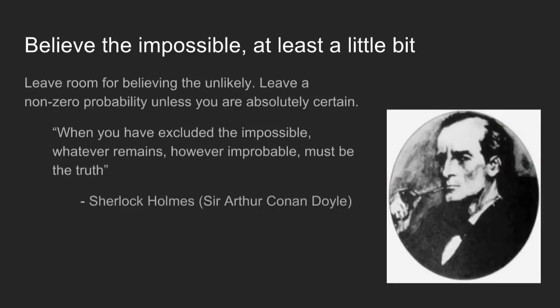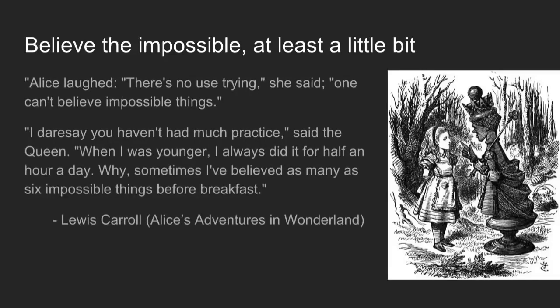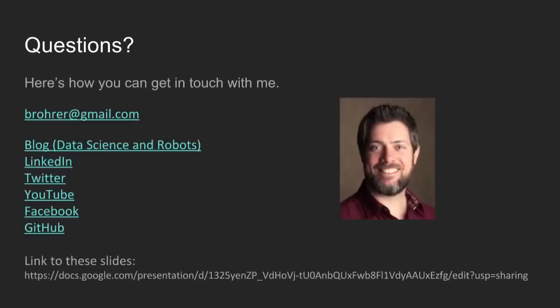The way to avoid this pitfall is to always believe things that we think are impossible — at least just a little bit. By leaving this room for something to be impossible, we can do like Sherlock Holmes says: 'Once you've excluded the impossible, then whatever remains, however improbable, must be the truth.' We don't want to exclude the improbable out of hand because then we're left with nothing. As Alice in a conversation with the Red Queen summed it up: 'There's no use in trying,' she said. 'One can't believe impossible things.' 'I dare say you haven't had much practice,' said the Queen. 'When I was younger, I always did it for half an hour a day. Sometimes I've believed as many as six impossible things before breakfast.' The secret to using Bayesian inference well is to keep believing impossible things. Thanks for your attention.